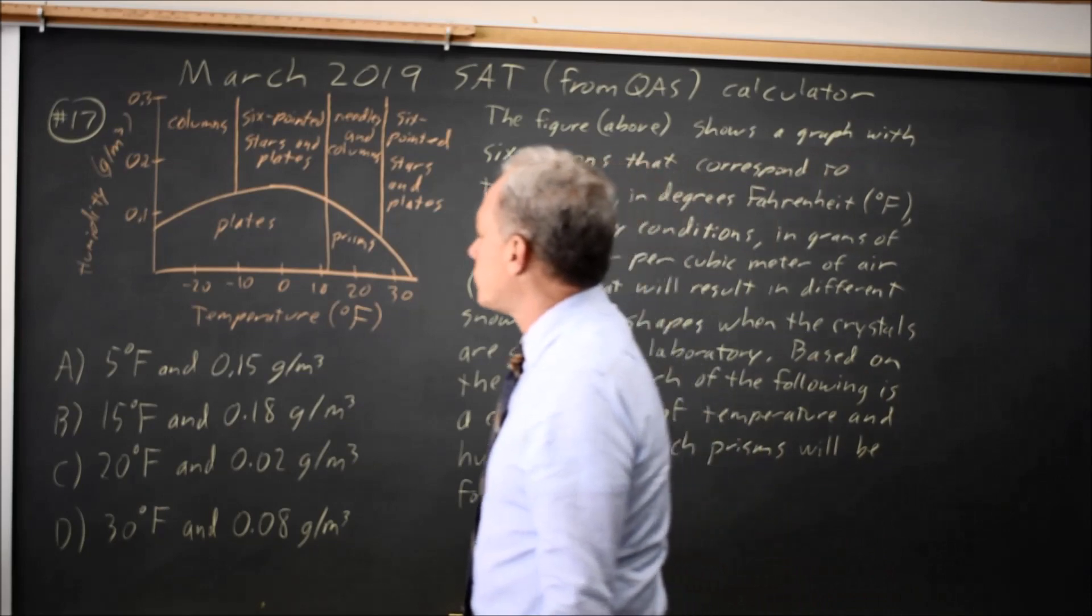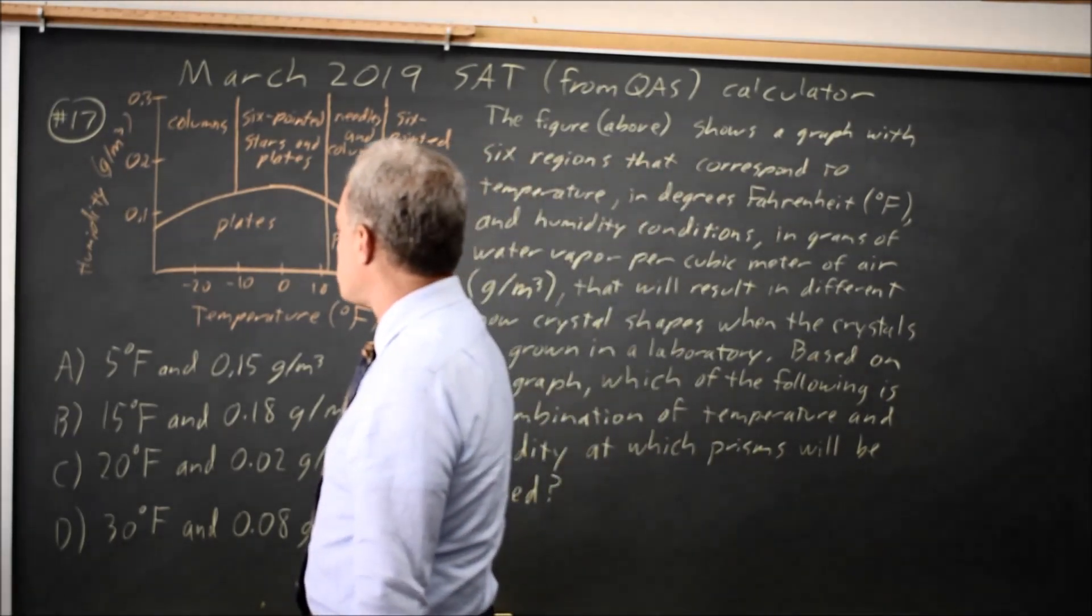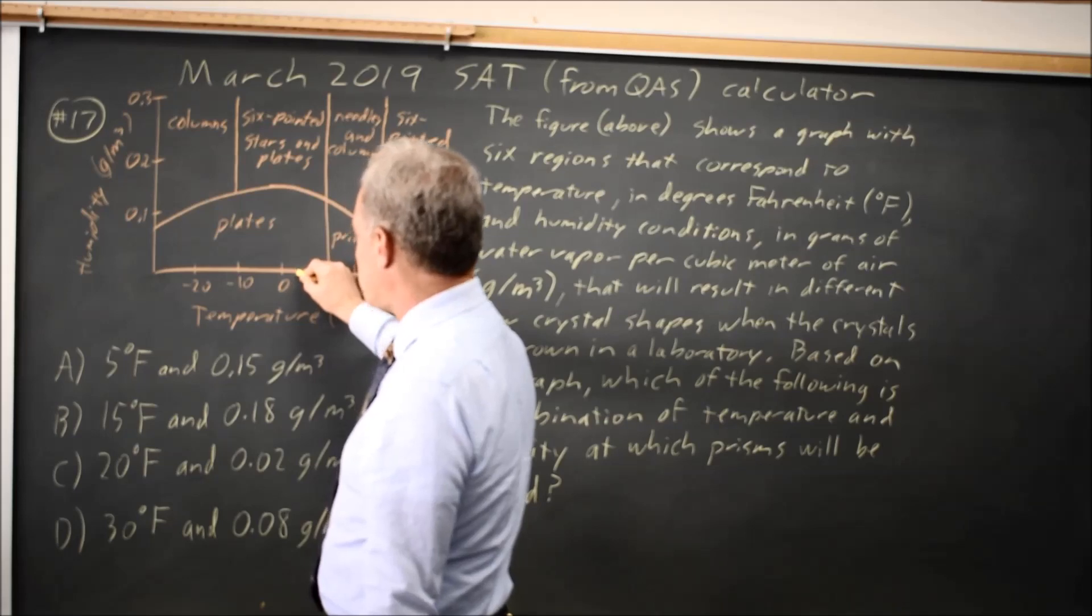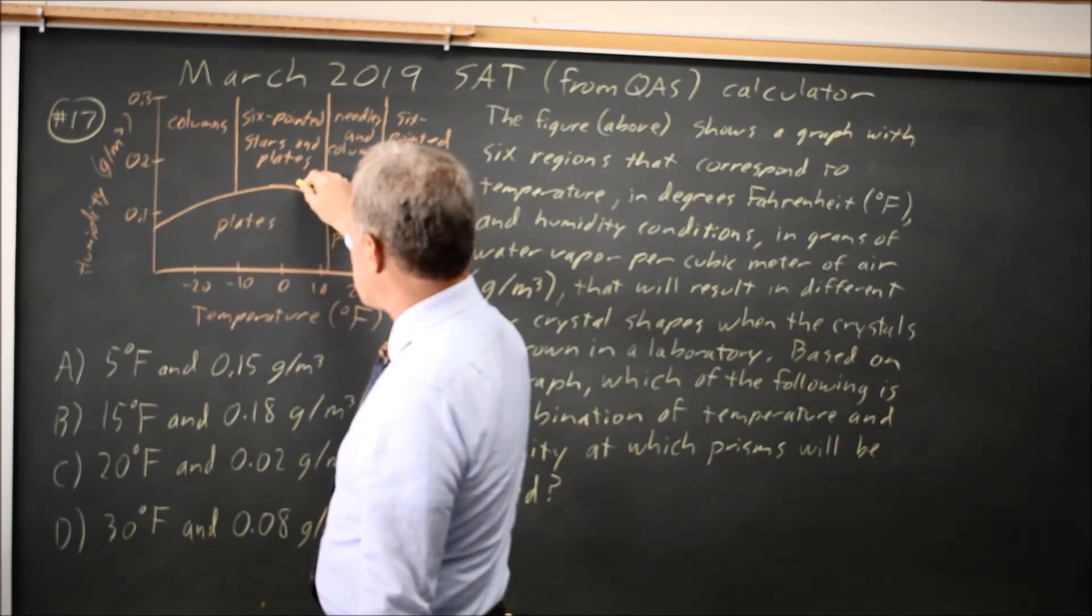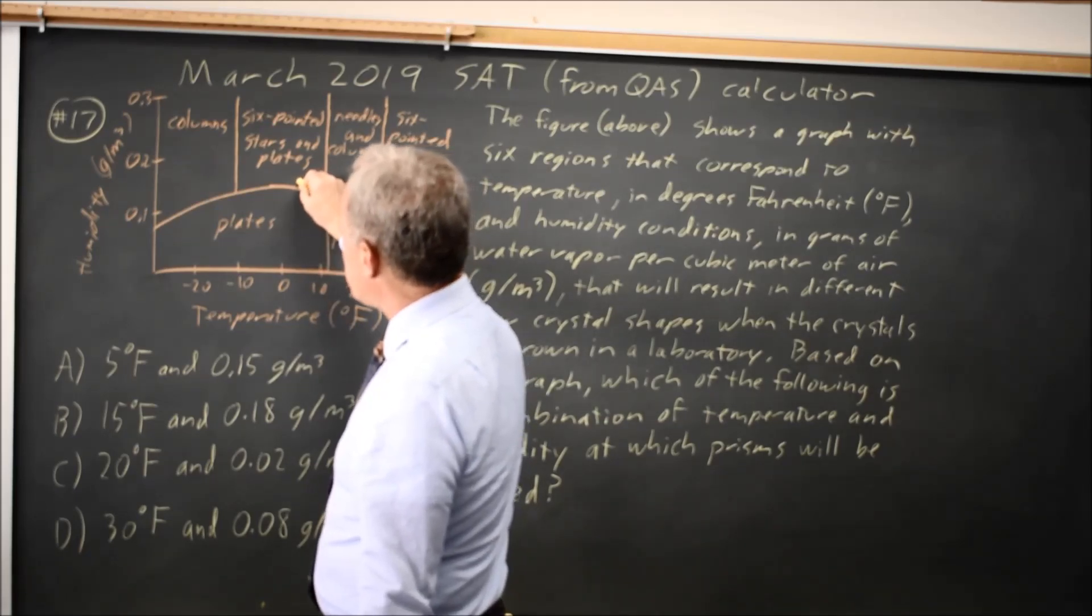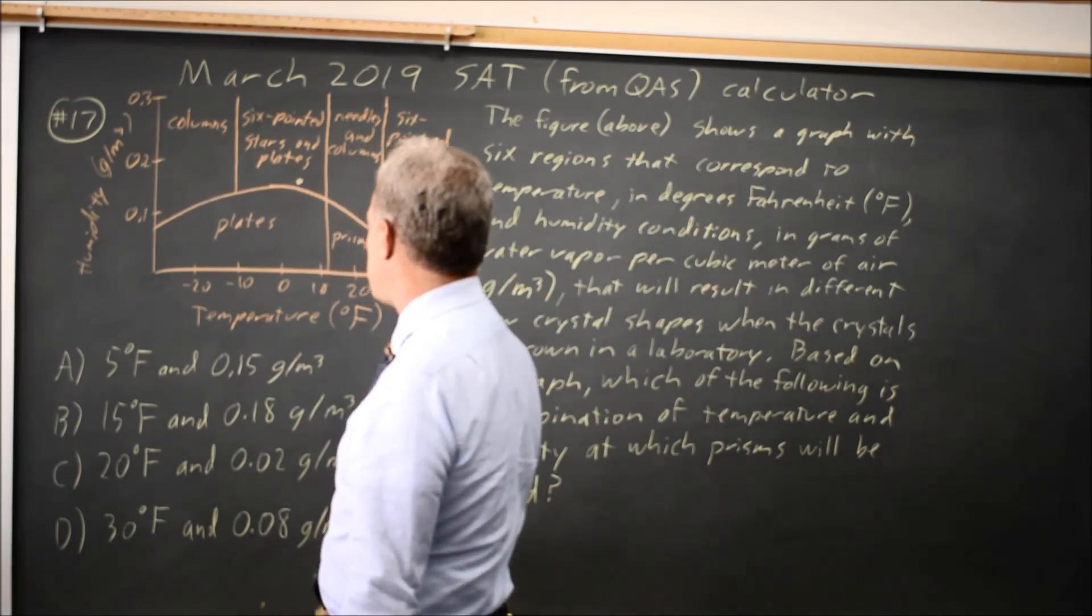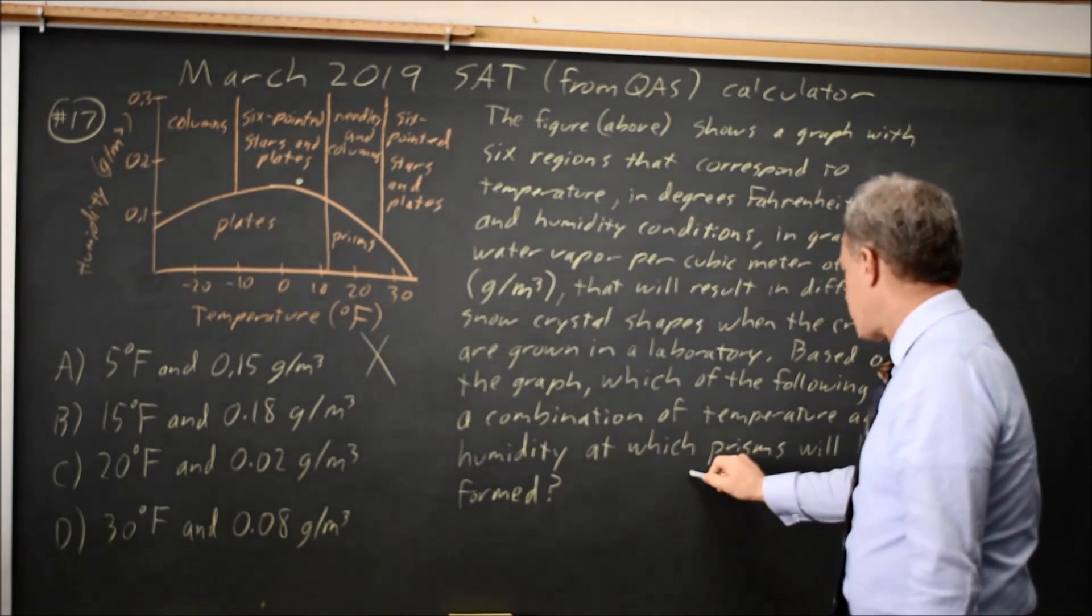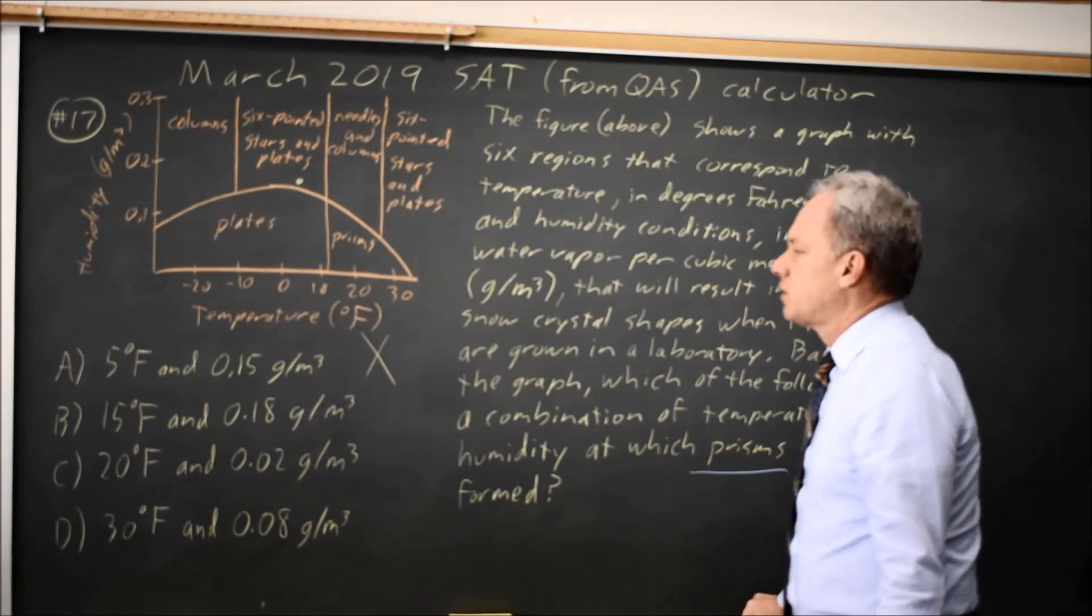So let's find the four points listed and see what shape we get. At 5 degrees Fahrenheit, which is here, and 0.15, which is about here, we get six-pointed stars and plates. That is not prisms. They're asking for prisms. So that would be wrong.